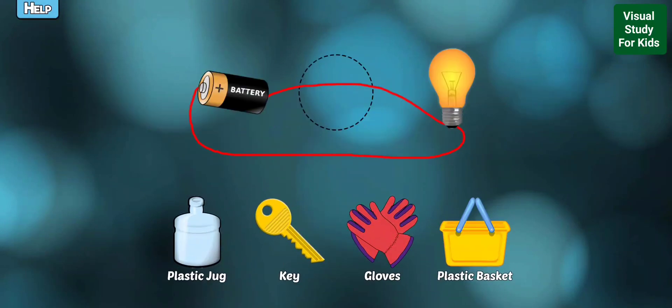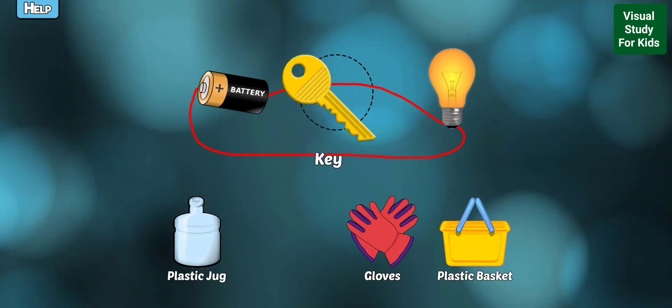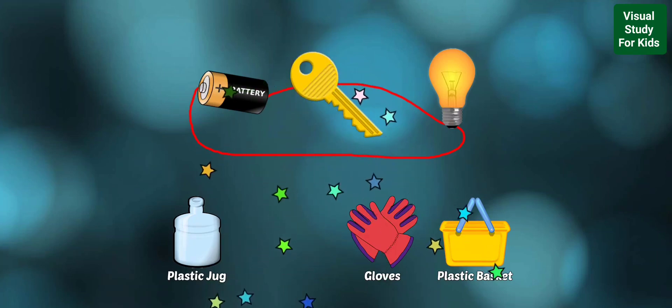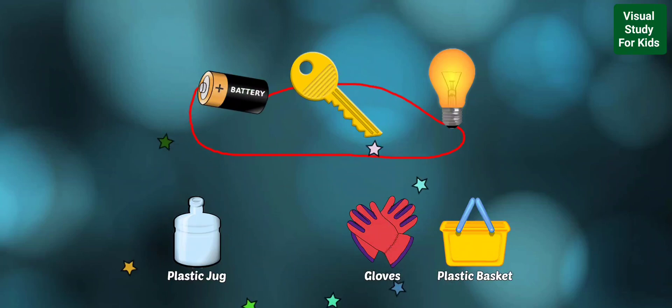Drag the object that is a conductor so the light bulb stays on. Yes! That object is a conductor because it will allow electricity to flow freely, which keeps the light bulb lit.